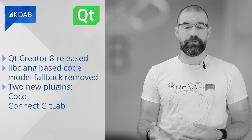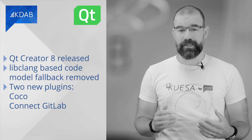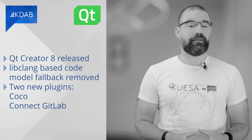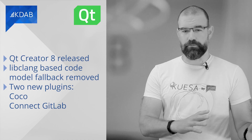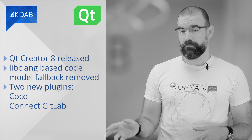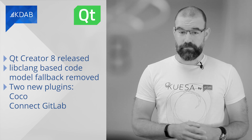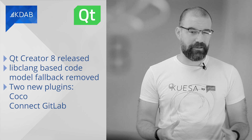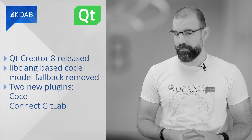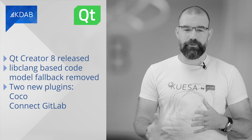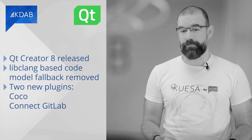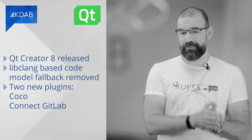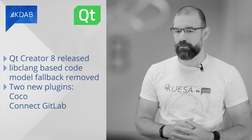A few weeks ago, Qt Creator 8 was released and it comes with a number of updates, changes and fixes. For example, the libclang-based code model fallback was removed and it now relies on clangd and the LSP client implementation. Also, issues with the handling of JavaScript string templates and with the nullish coalescing operator were fixed. When following a symbol, Qt Creator would sometimes open the corresponding QML file from the build directory instead of the source directory — that should now be fixed.